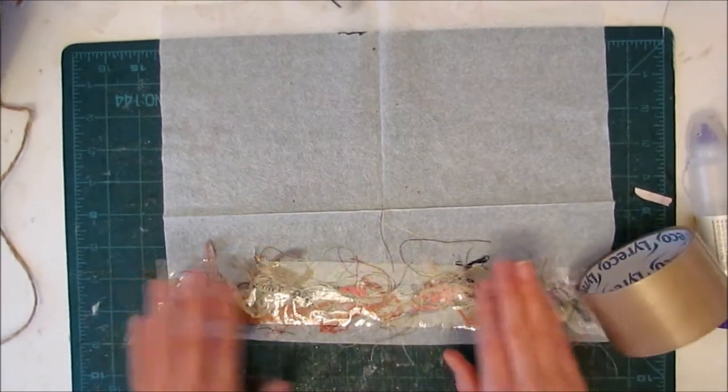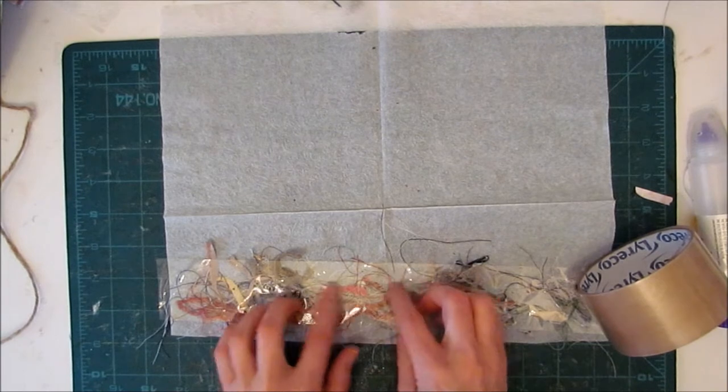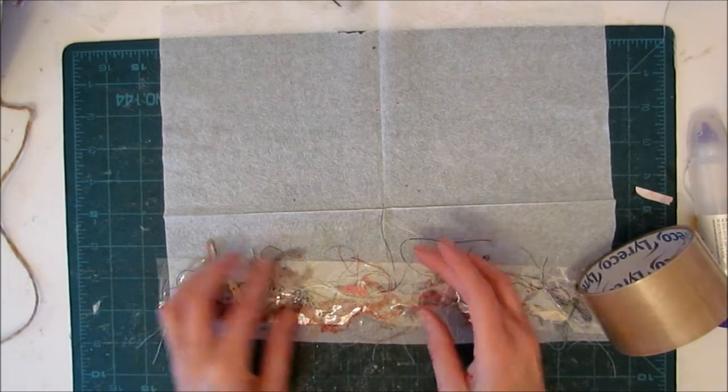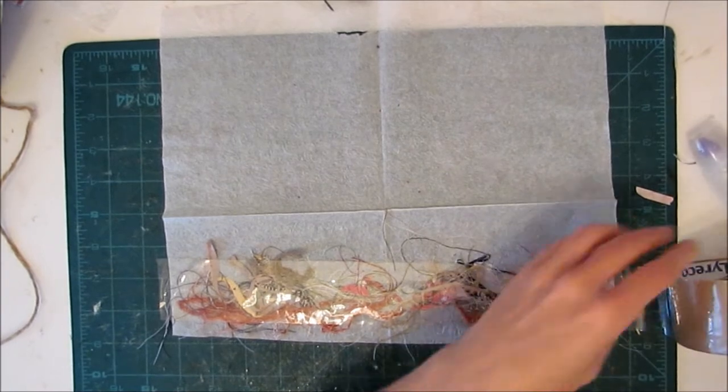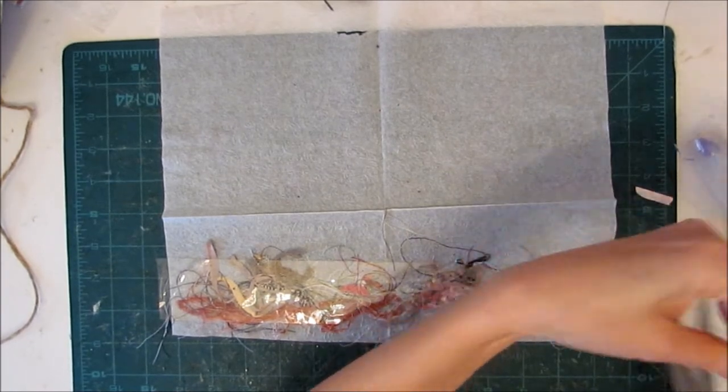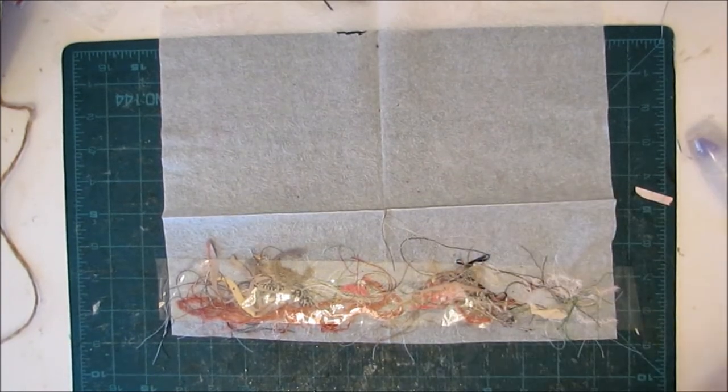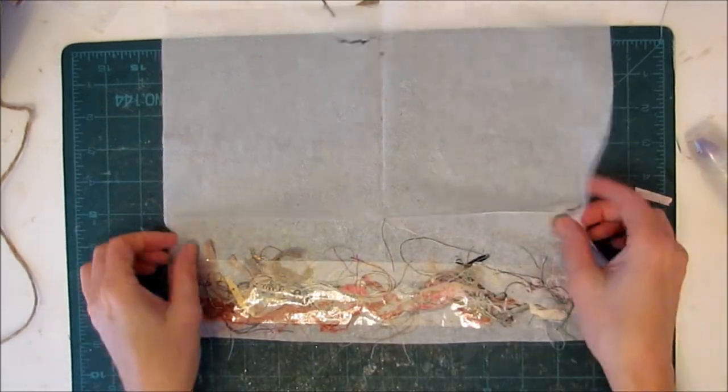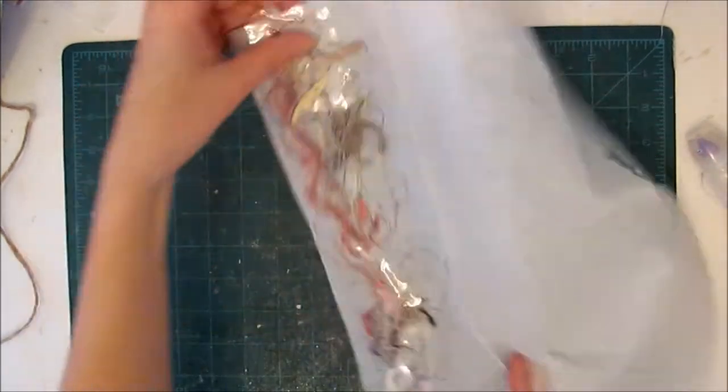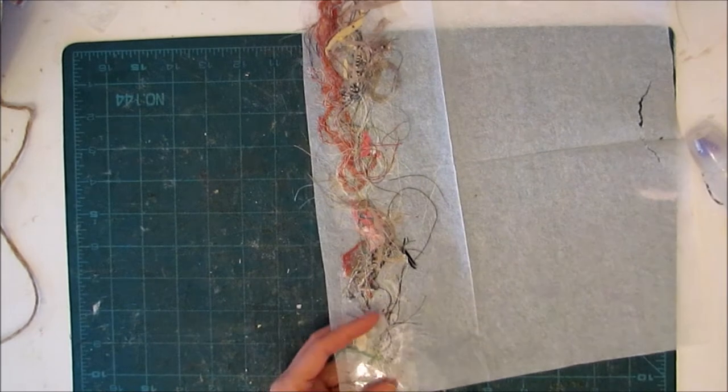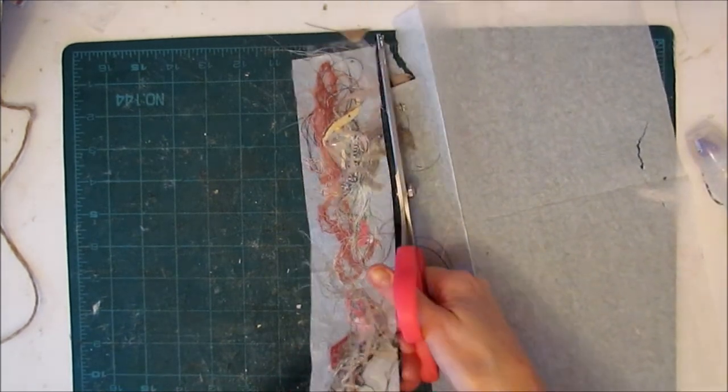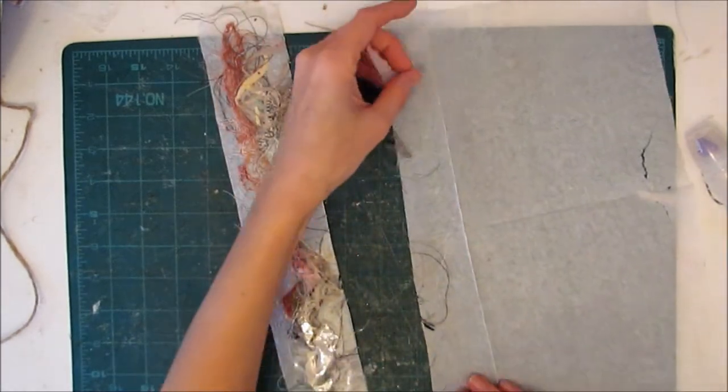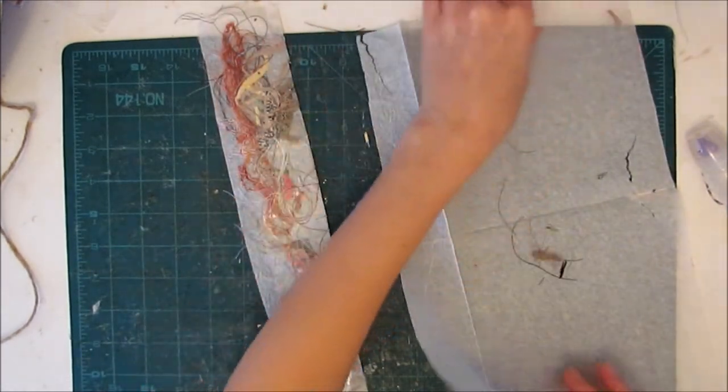Okay, so you can put as much or as little as you want. And it doesn't have to be exactly, like, within a certain, like, it can go over the edge or whatever. And then we just take our tape and lay it down over top. Press it down. It's nice if you do have some empty areas where the tape can cling to the backing.